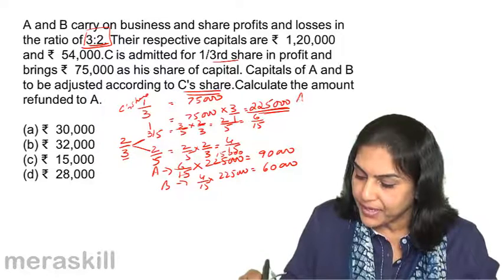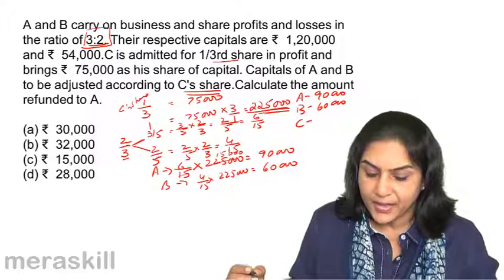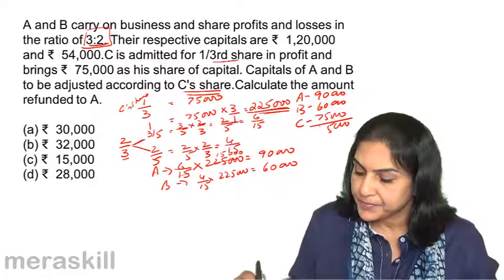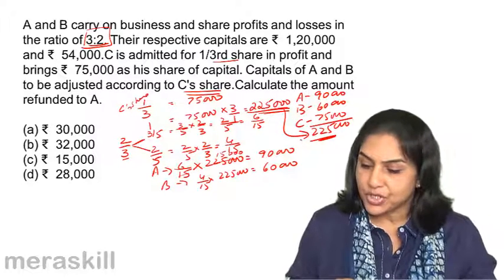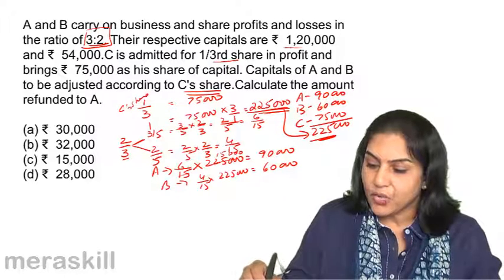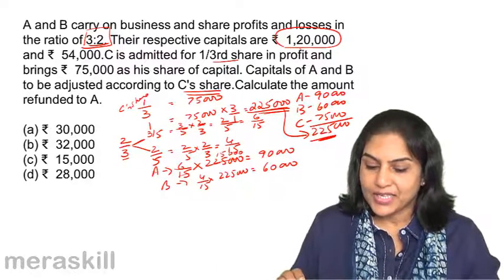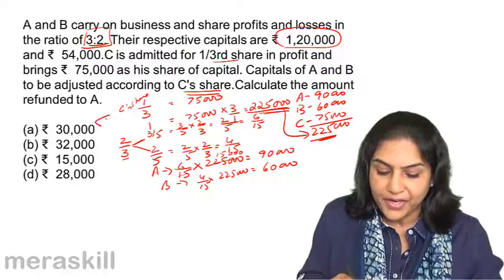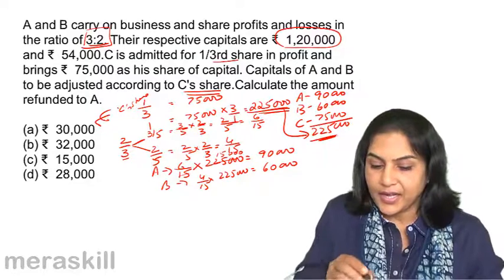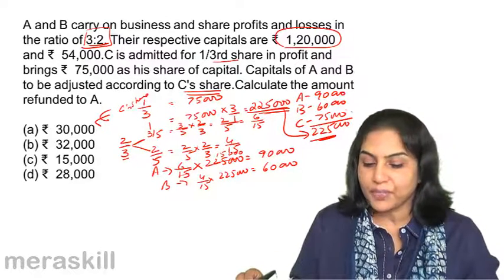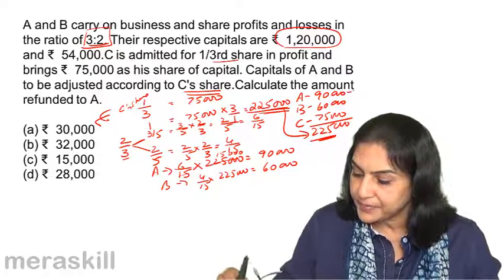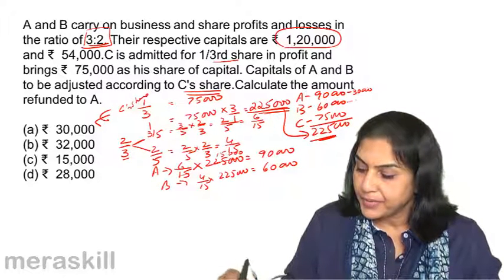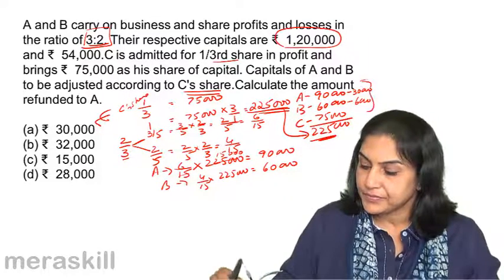So the capitals should be: A — 90,000, B — 60,000, and C is already bringing in 75,000, totalling 2,25,000. Currently, A's capital is 1,20,000, so 30,000 needs to be refunded to A. B's current capital is 54,000, so 6,000 should be refunded to B. The question asks only for the amount refunded to A, which is 30,000. The correct answer is option A.